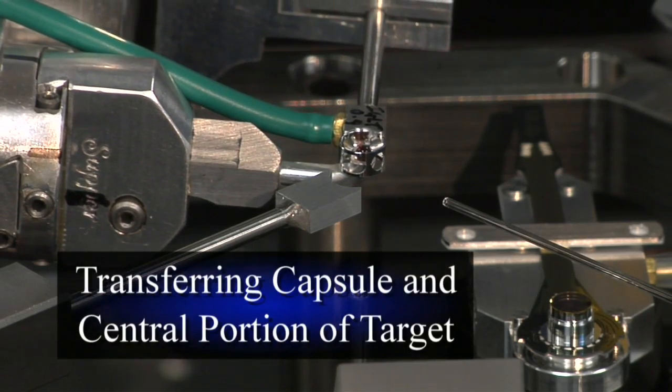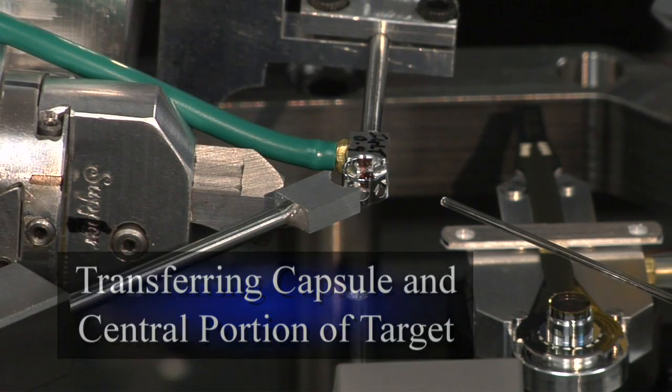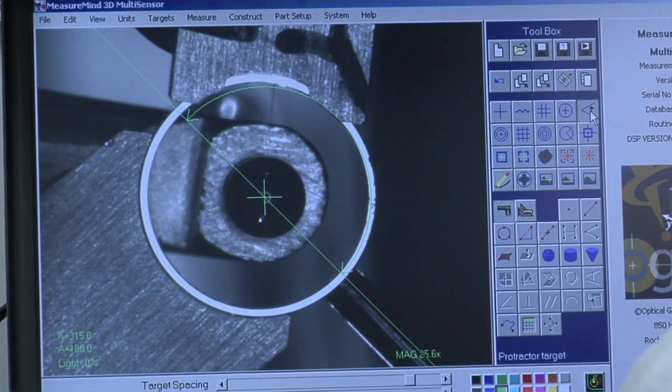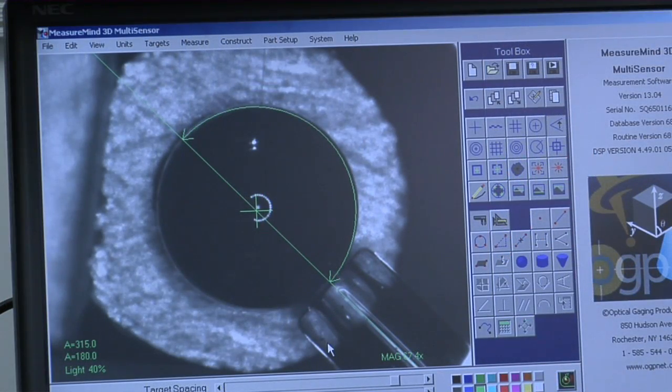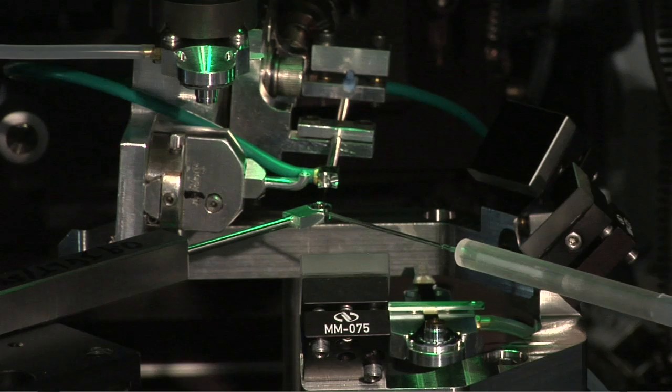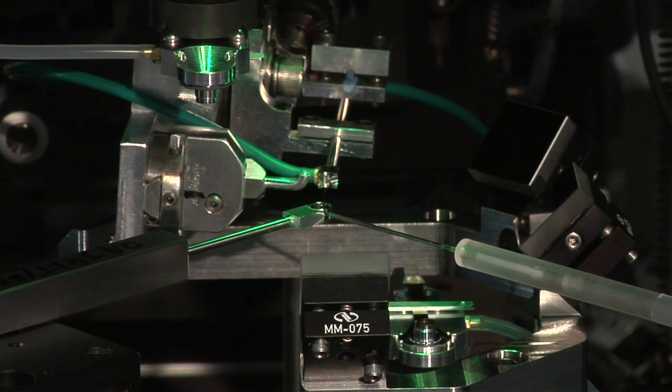The capsule in the central portion of the target are transferred to tooling on the machine. The thin vacuum wand passes through the central portion of the target and grabs the two millimeter diameter capsule. The lower half of the target is aligned to the capsule.